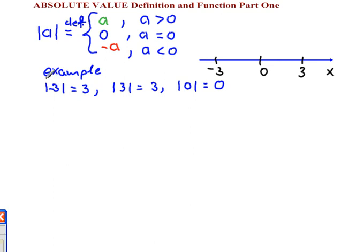So for example, absolute value of negative 3, according to the definition, will be equal to negative negative 3. So the result is positive 3.